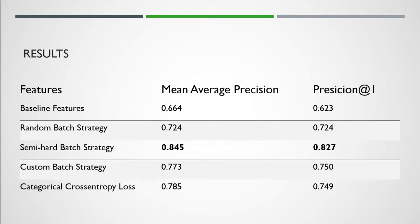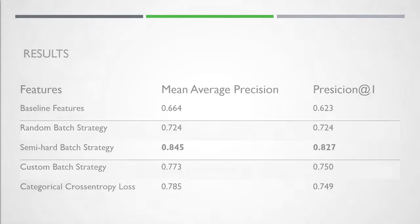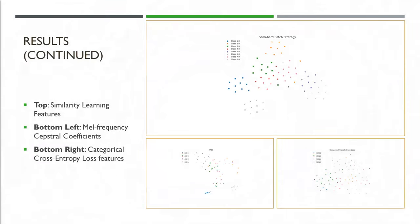All features extracted using the parallel recurrent network outperformed the baseline MFCC features. Unfortunately, when using the hard triplet mining strategy, we were unable to generate any valuable results. This is mostly due to the network just not learning using the batch hard strategy even after pre-training with categorical cross-entropy loss. The above t-SNE plots show how successful we were able to group music features from the same class. The top center shows the results from the semi-hard batch strategy while the bottom left and bottom right are the MFCCs and cross-entropy loss features respectively.